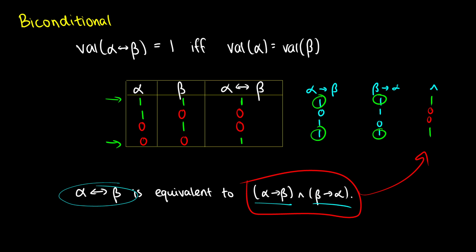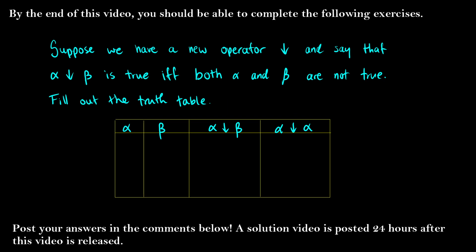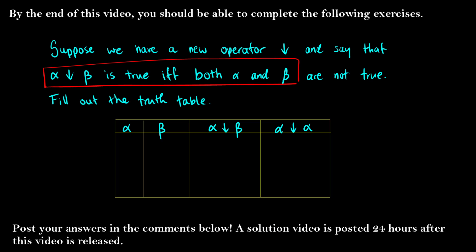So those are the truth tables for our five basic operators. At this point, you should be able to do the practice question where we add a new operator — I give you the conditions, and I'd like you to try to fill out the truth table. There will be a solution video in 24 hours. As always, if you have any questions, feel free to post them in the comments below, and I will do my best to answer them.